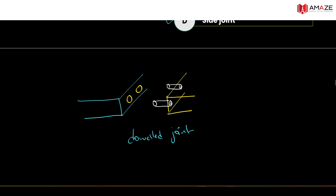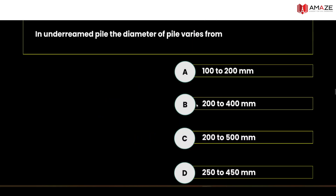For underreamed piles, the diameter of the pile varies from: 100 to 200 mm, 200 to 400 mm, 200 to 500 mm, or 250 to 450 mm.